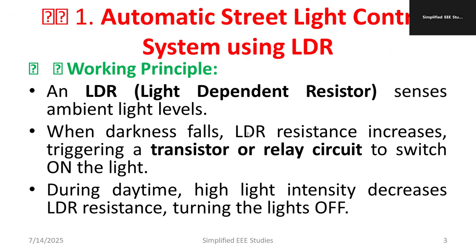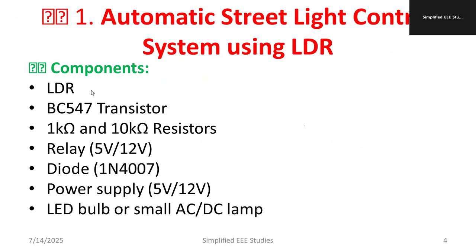We require a Light Dependent Resistor which senses the ambient light level. When darkness falls, the resistance of the LDR increases, which triggers the transistor or relay circuit to switch on the light. During daytime, high intensity decreases the LDR resistance, activating the turn-off of the light system. Key components include an LDR, BC547 NPN transistor, current limiting resistors of 1 kilo-ohm and 10 kilo-ohm, a relay, and a diode for unidirectional current flow.